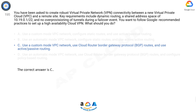Choose the appropriate tunnel configuration based on the number of HA VPN gateways. If you have a single HA VPN gateway, use an active/passive tunnel configuration. If you have more than one HA VPN gateway, use an active/active tunnel configuration. Therefore, C is the correct answer.